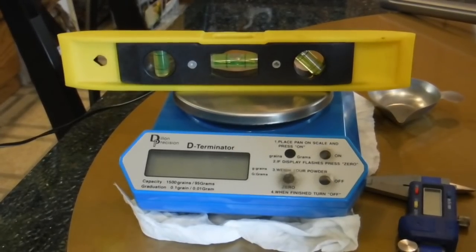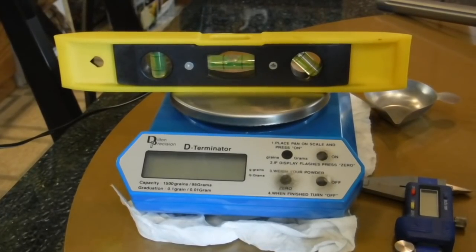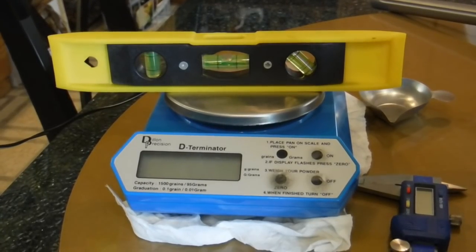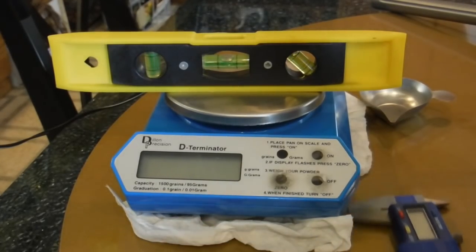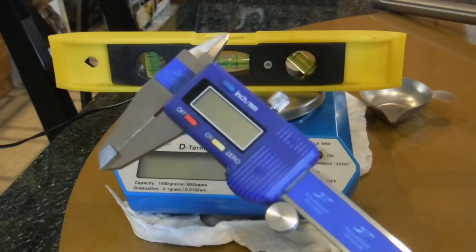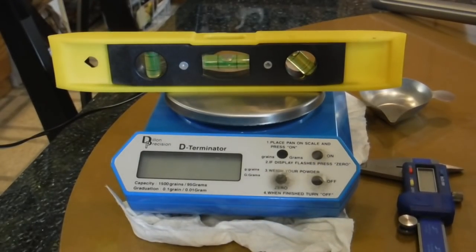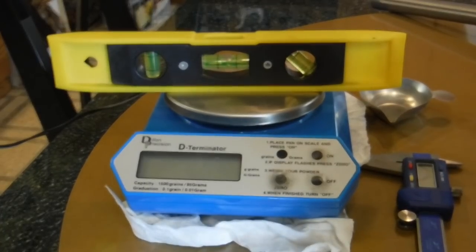So, first, let's go ahead and weigh each of the hundred cases in that box to see what kind of variance we get on weight. Then, we'll do a measurement of the length of the brass to see what kind of variance we have with the length.